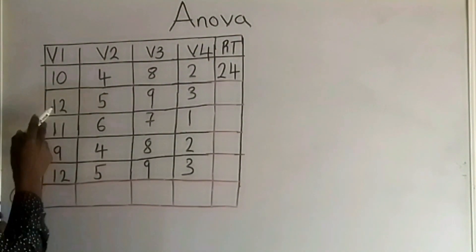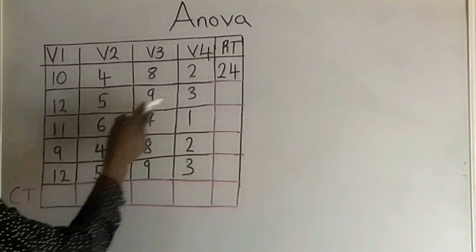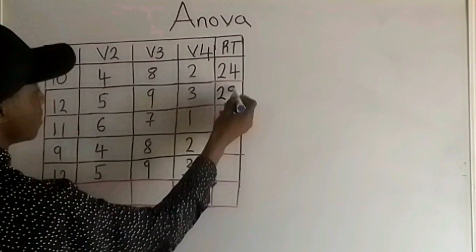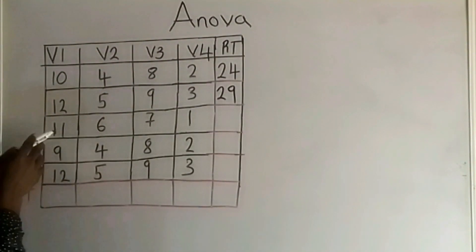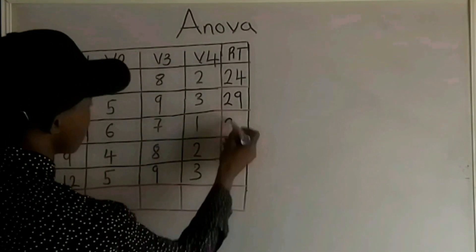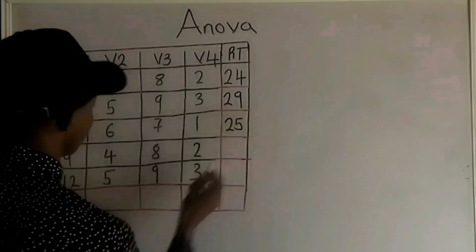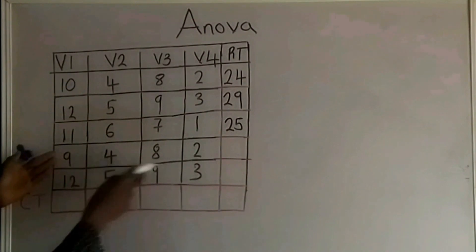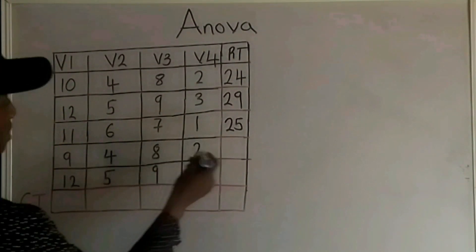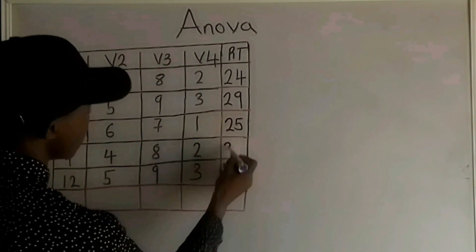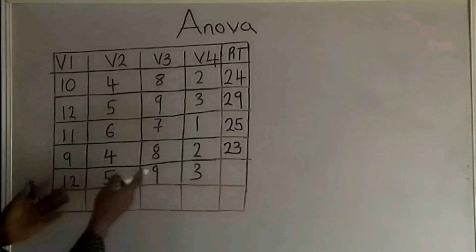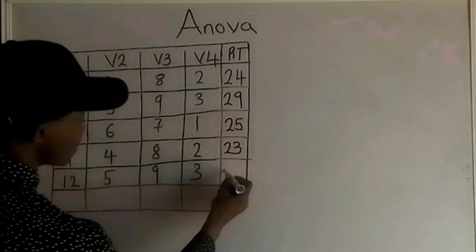For the second cell, I have 12 plus 5 plus 9 plus 3. That is 29. For the third cell, that is 11 plus 6 plus 7 plus 1. That is 25. For the fourth row, I have 9 plus 4 plus 8 plus 2. That is 23. For the fifth cell, I have 12 plus 5 plus 9 plus 3. That is 29.